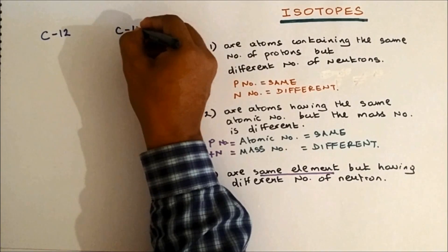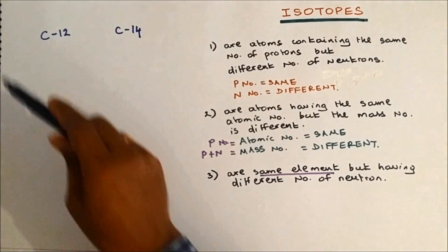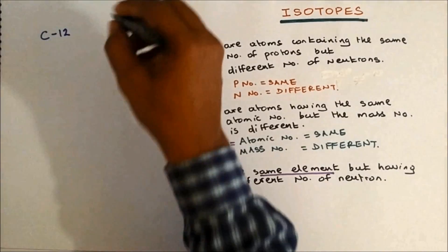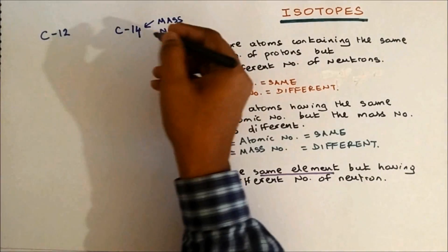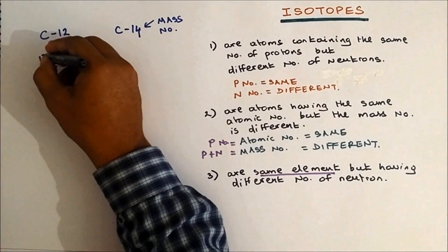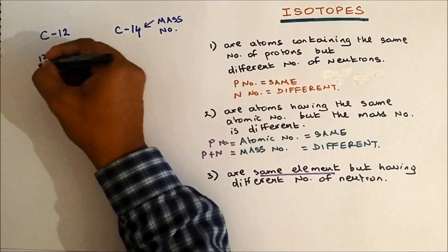Okay, let's do the example of carbon-12 and carbon-14. Carbon-12 and carbon-14: the numbers 12 and 14 refer to the mass number.